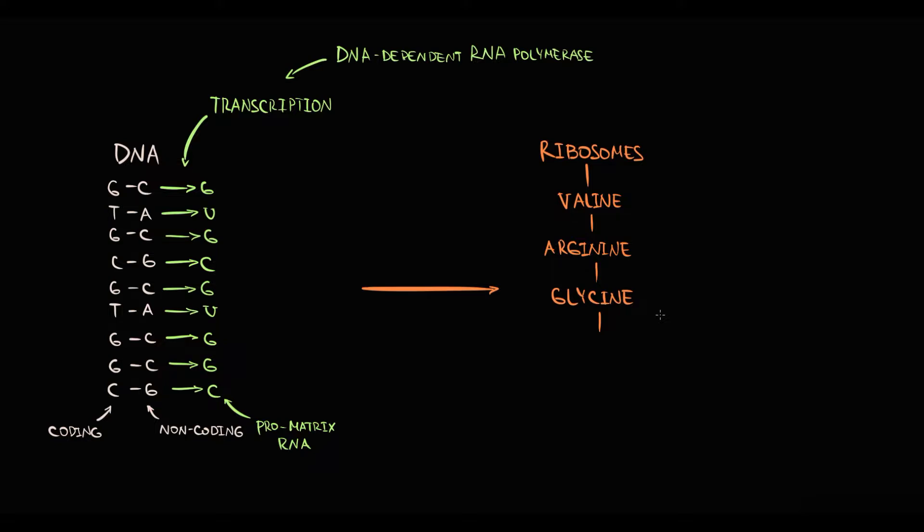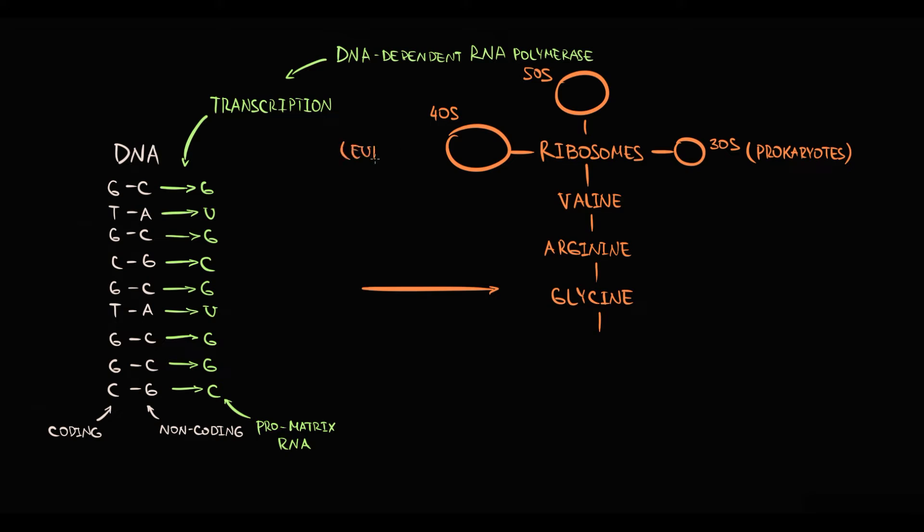We have to know that in prokaryotes, ribosome is composed of two subunits, 30S subunit and 50S subunit. In eukaryotes, ribosomes are composed of 40S subunit and 50S subunit. So they both have 50S subunit. And the molecule that delivers amino acid to ribosome is called transfer RNA molecule.